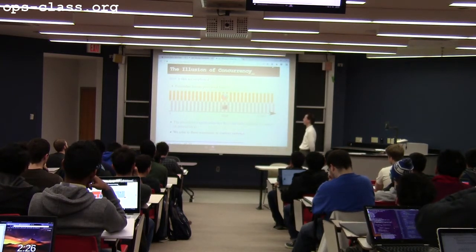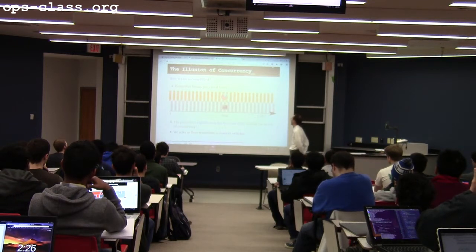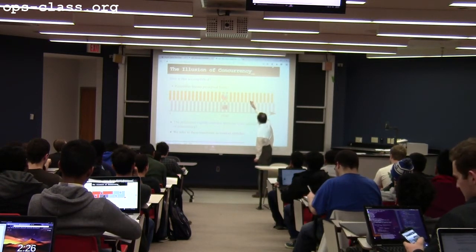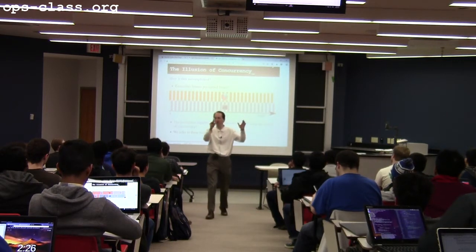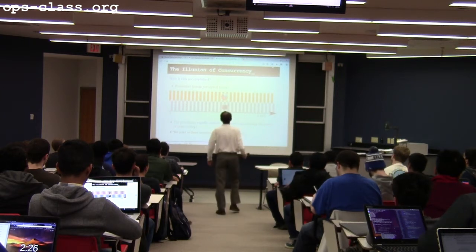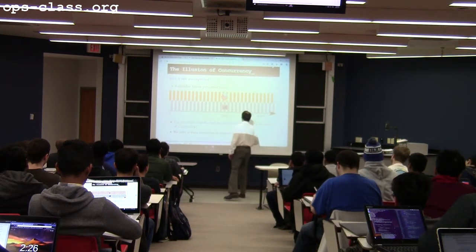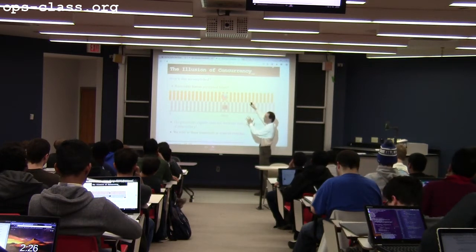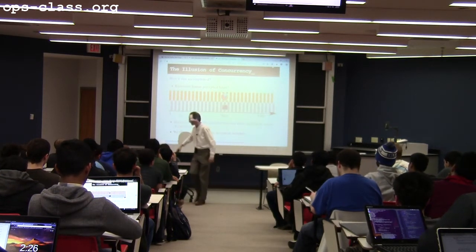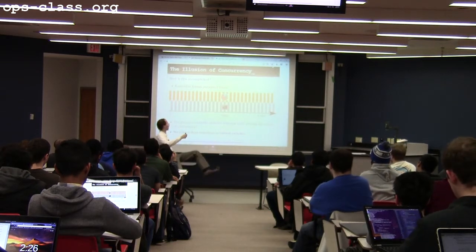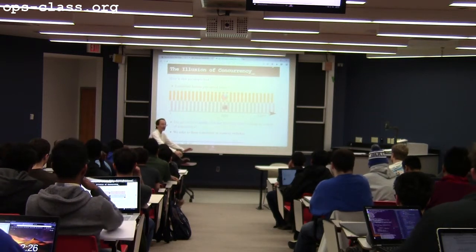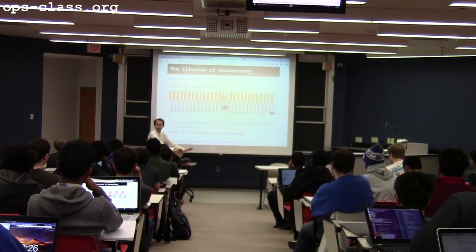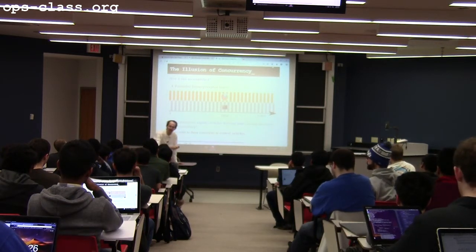These switches are called context switches. The actual point at which we switch from one to another — if we're switching from thread number one running Firefox to thread number two running a terminal — we have to switch out the context of one thread to the context of another. How do we affect this switch? The CPU is running one thing and we need to junk what the CPU is doing and replace it with something else.